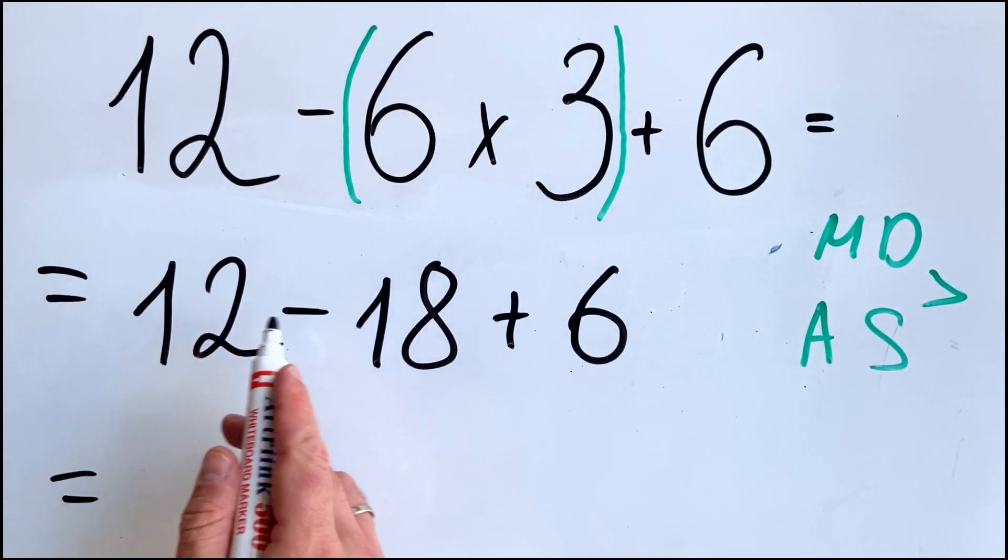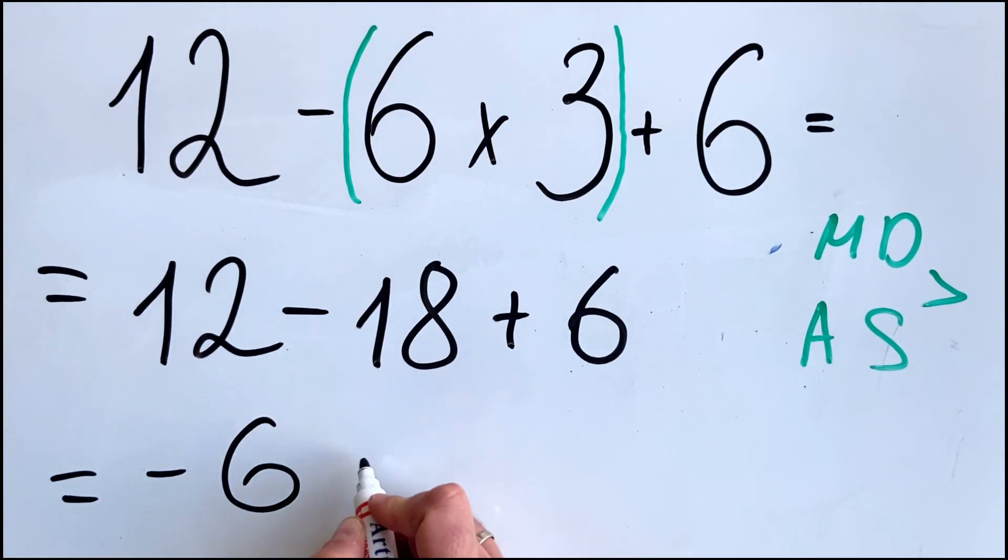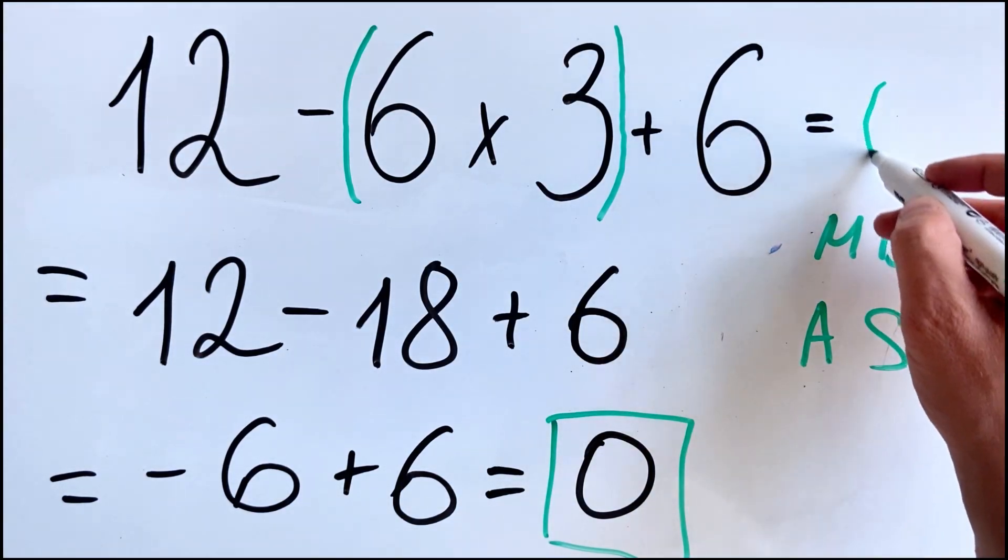12 minus 18 is minus 6 plus 6. Minus 6 plus 6 is the same as 6 minus 6, so we get 0. The correct answer is 0.